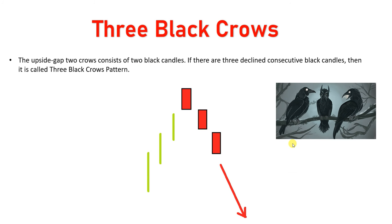Now let's start with the three black crows triple candlestick pattern. As the name suggests, three black crows is similar to the upside gap two crows pattern, but here we take confirmation from three candles rather than two — making it a later but more confirmed entry. As the Japanese said, three black crows means bad news is about to come. Your entry should be below the third candle, and you will put your stop loss above that candle's top.